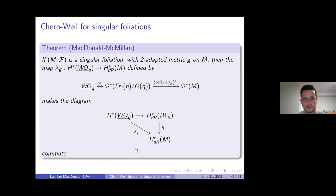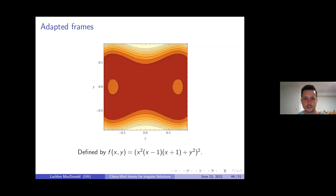If you have a two-adapted Riemannian metric on the complement of the singular locus, you do get a section of the Haefliger two-frame bundle by definition, and as a result you get a Chern-Weil-esque map from your algebra of polynomials to the algebra of forms on M. This characteristic map makes the diagram commute — we've found a Chern-Weil map for singular foliations — but crucially the Riemannian metric building this map is only defined on the complement of the singular locus.